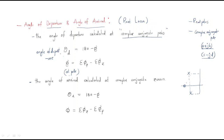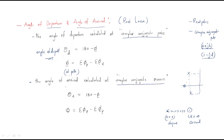Departure is only applicable for poles, because the root locus path travels from pole to zero — that is, K=0 corresponds to a pole and K=∞ corresponds to a zero. That is why it is called departure from poles. Similarly, arrival is applicable for complex conjugate zeros, because the root locus arrives at a zero.